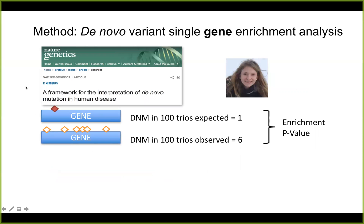As background: how we usually identify disease-associated genes in trio studies — we calculate the number of de novo variants in a certain gene per cohort that we would expect. For example, in 100 trios we would expect one de novo variant by chance. However, if we then see more than the expected number of de novo variants in our patient cohort, we can calculate an enrichment p-value. This model was developed by Mark Daly and Samocha and assigns every gene a specific mutation rate. Very simplified: the larger the gene, the more mutations you would expect by chance.